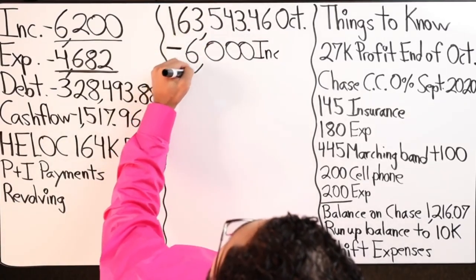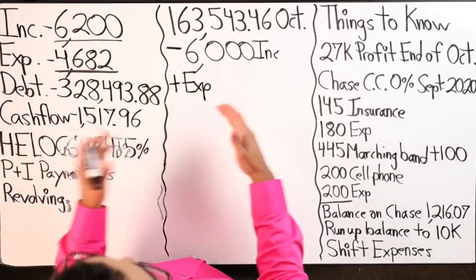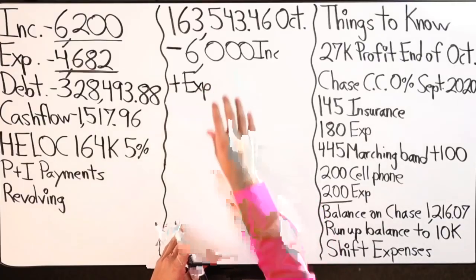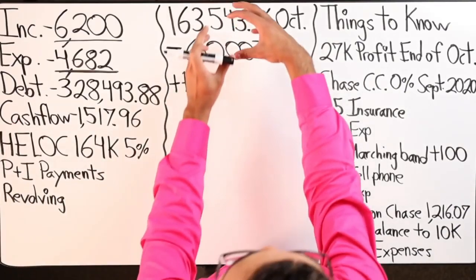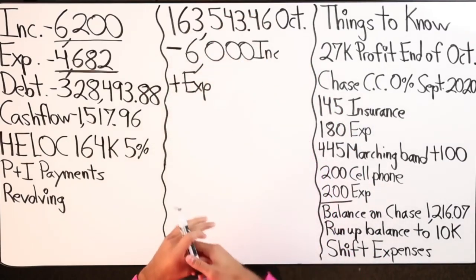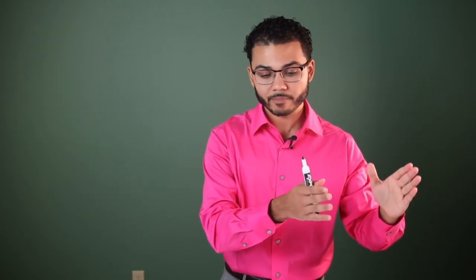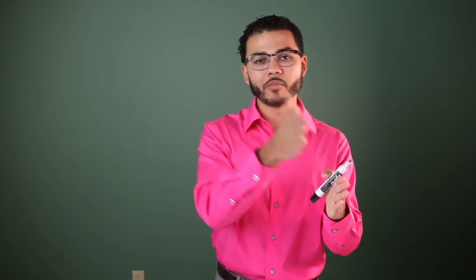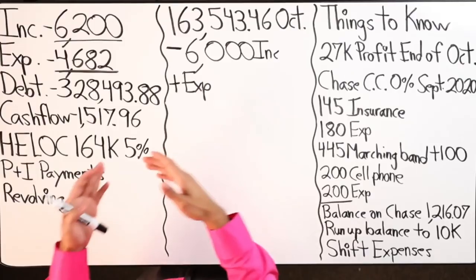People often get confused: if you dump all your income into the HELOC, how do you pay your bills? It's a simple transfer — the HELOC is attached to a checking account, so you transfer money the same day income goes in. Whether you're paid weekly, bi-weekly, or monthly, you pull expenses out every three to five days to limit the amount withdrawn at once and keep more money in the HELOC, lowering interest costs.